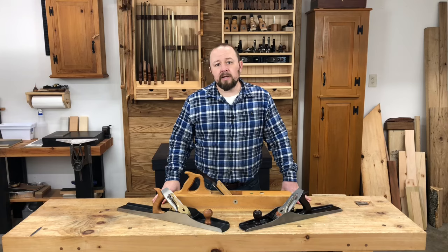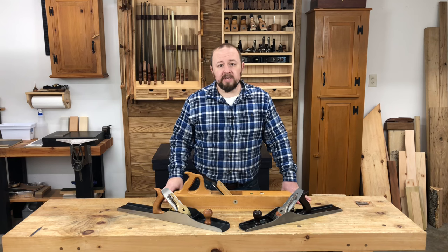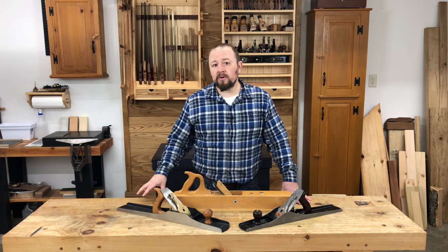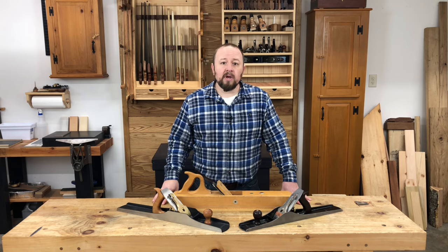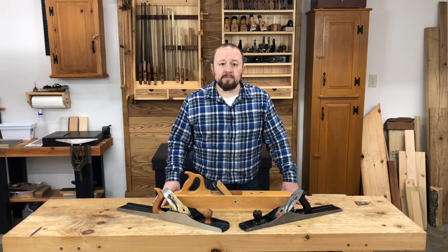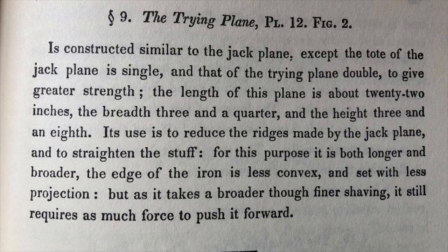So according to Neve, the long plane is used primarily on wide board faces for smoothing and straightening them after the foreplane, whereas the jointer plane is used primarily on edges, especially for making edge joints. However, at this point we still haven't heard of a plane called the triplane. So let's jump forward to 1845 and a book written by Peter Nicholson. In Nicholson's book, he finally describes the triplane: 'The length of this plane is about 22 inches. Its use is to reduce the ridges made by the jack plane and to straighten the stuff.'